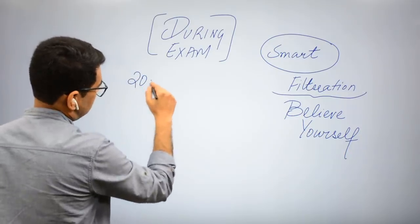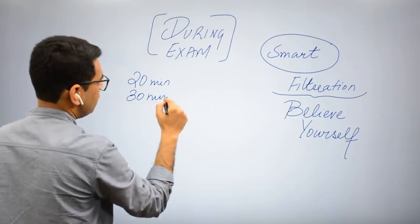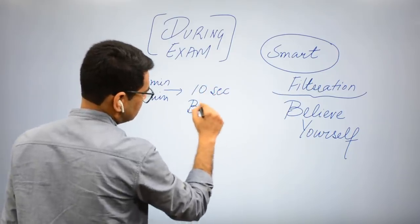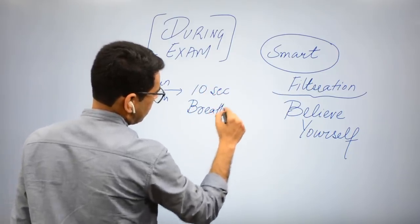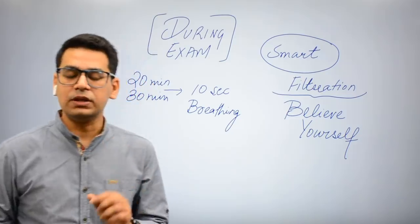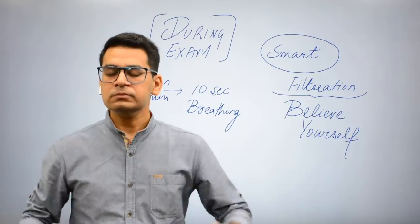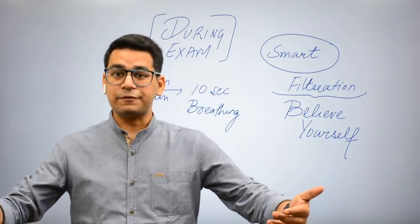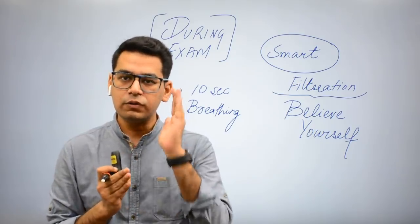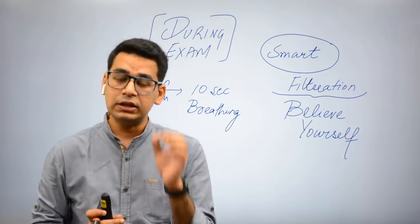After every 20 minutes, after every 20 minutes or let's say 30 minutes, after every interval of 20 to 30 minutes you should take a 10 second break - 10 second breathing exercise. 10 second hi maang raha hoon, jyada nahi maang raha hoon. 10 second breathing, close your eyes. At least five times deep breathing with your eyes closed. You have to close your eyes, make sure you should not be watching anyone, any screen, anything. Close your eyes and then do this breathing exercise.